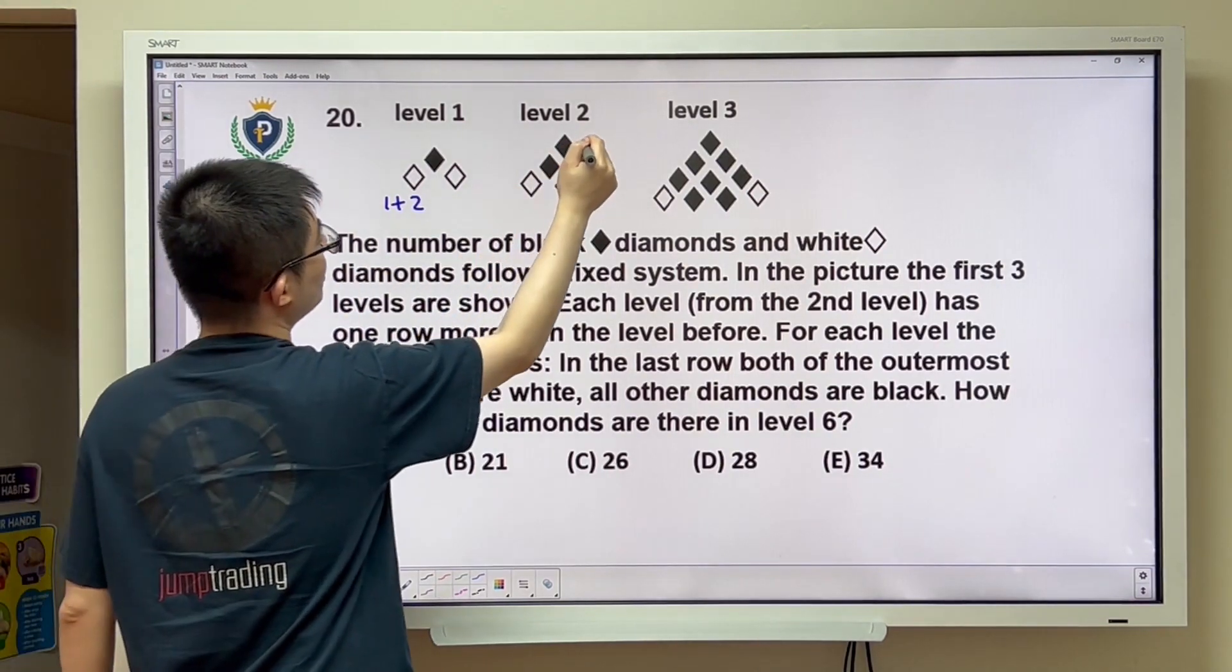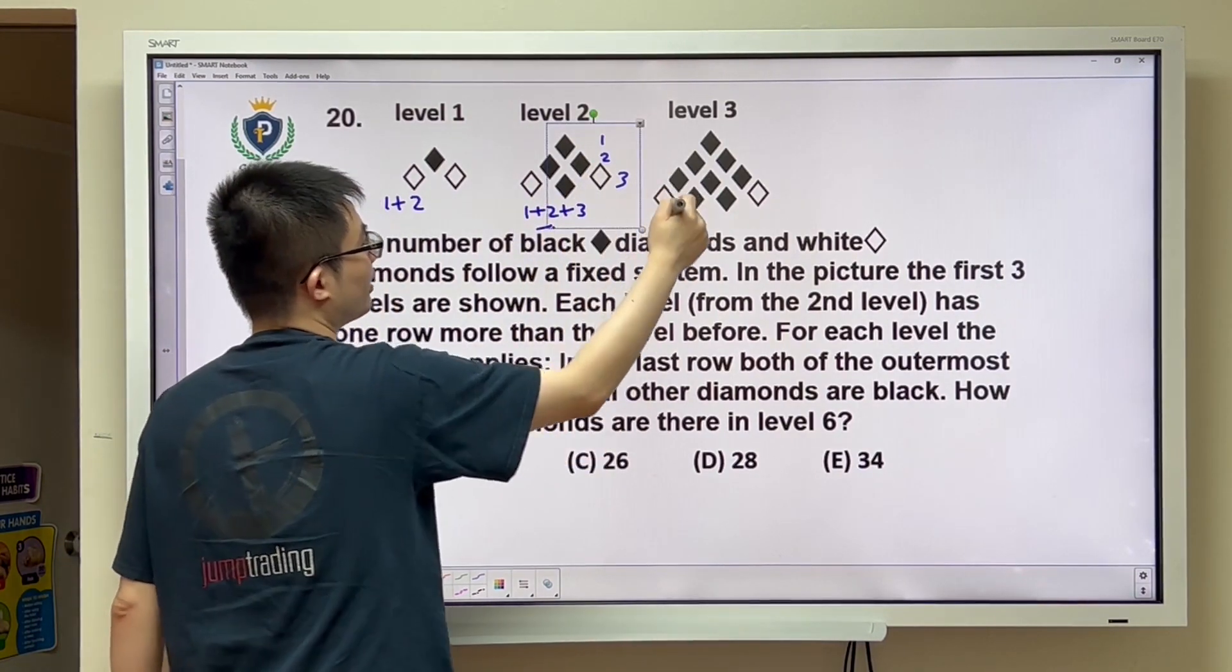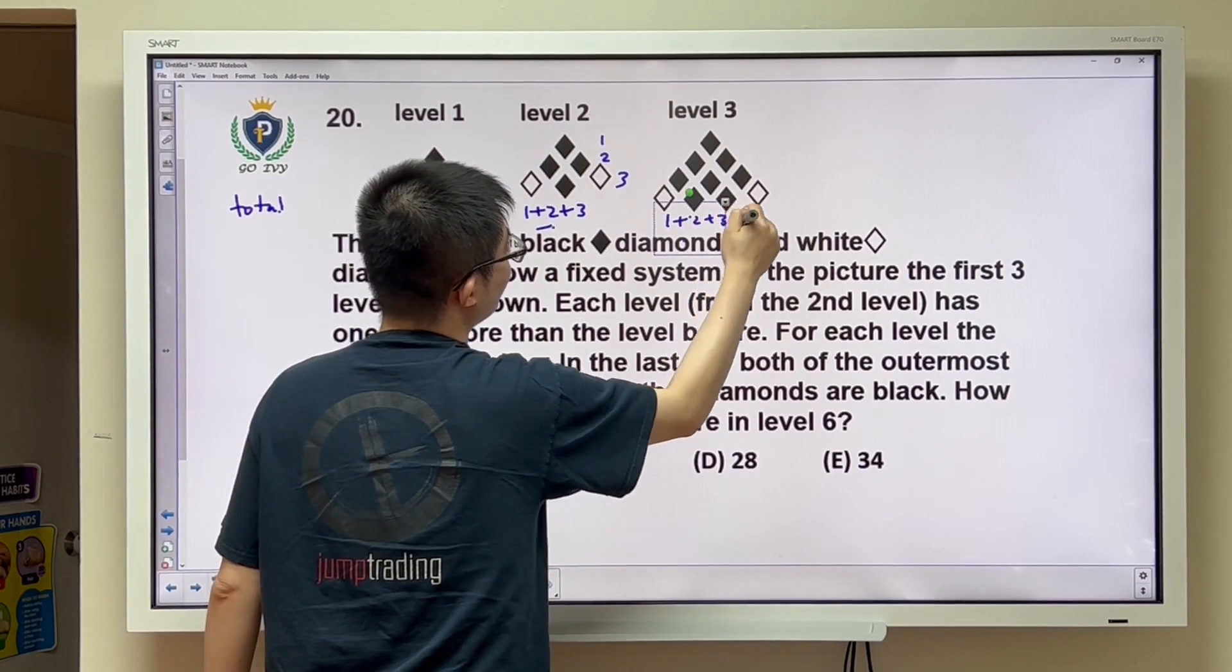In the second one, it's going to be 1 plus 2 plus 3. In the third one, it's going to be 1 plus 2 plus 3 plus 4.